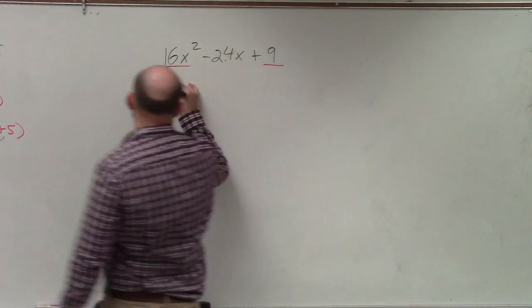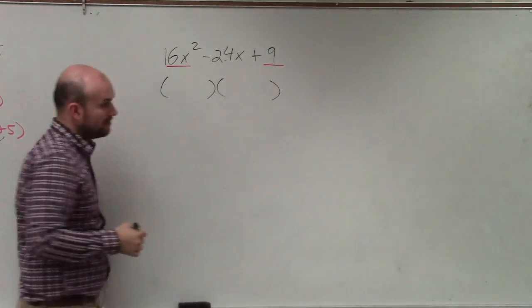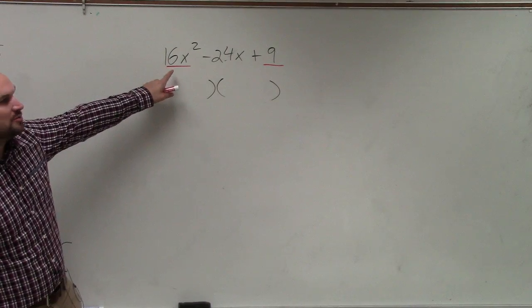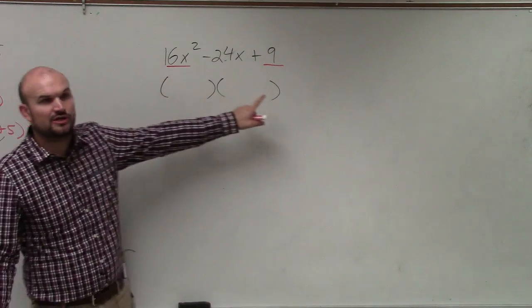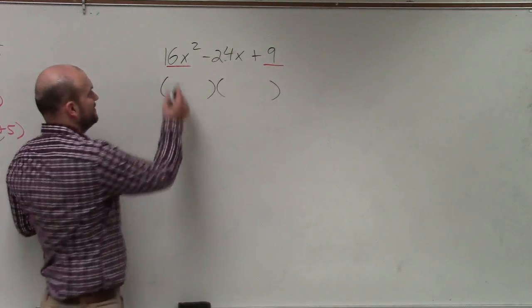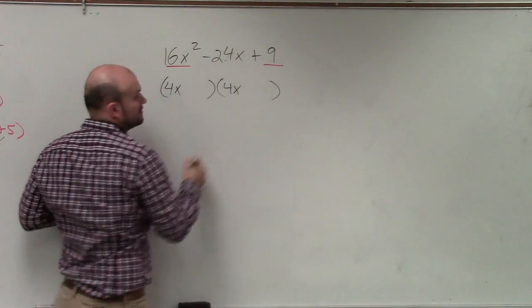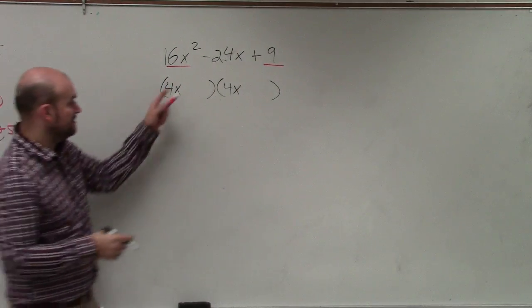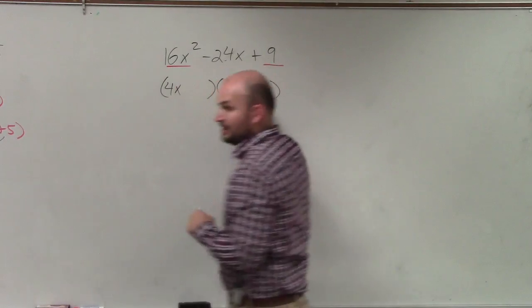The best thing to do here is just to break it up like we do before. If I'm going to assume this is going to be a factor term by itself, then this would have to be 4x and 4x, right? And then this would have to be 3 and 3.